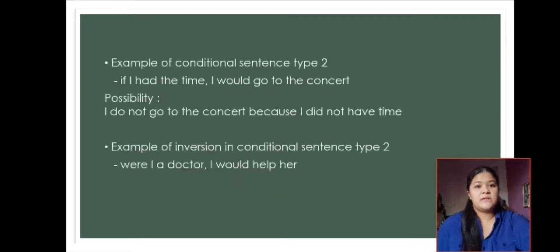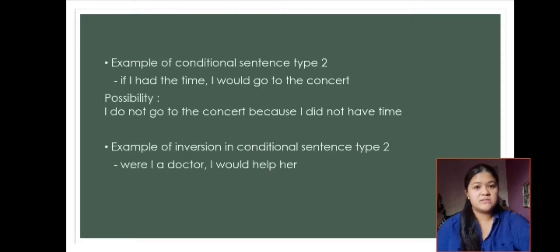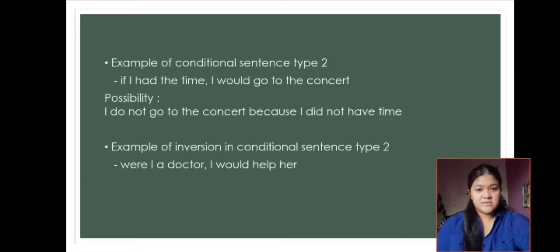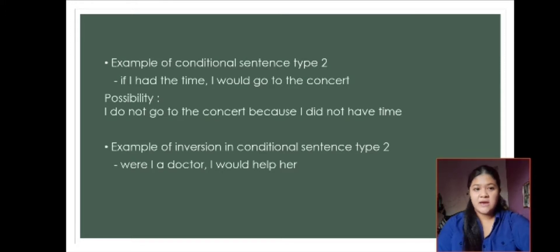An example of conditional sentence type 2: 'If I had time, I would go to the concert.' Here 'if' introduces the clause, 'I' is the subject, 'had' is verb 2 (from verb 1 'have'), 'time' is the complement, then 'I' is the subject again, 'would' is the modal, and 'go' is verb 0. The fact of this example is: I do not go to the concert because I did not have time.